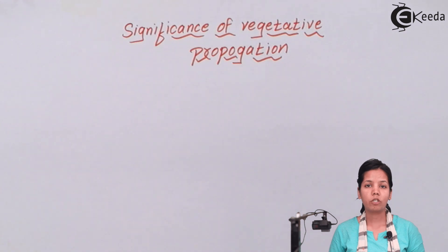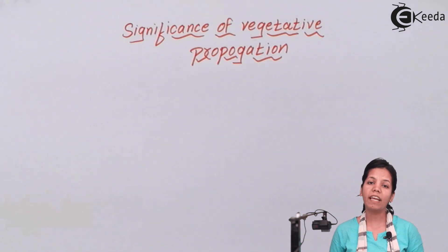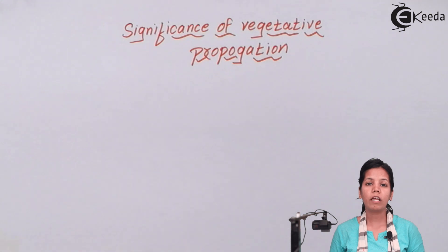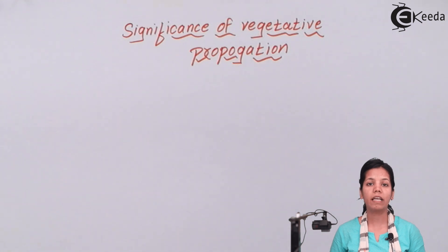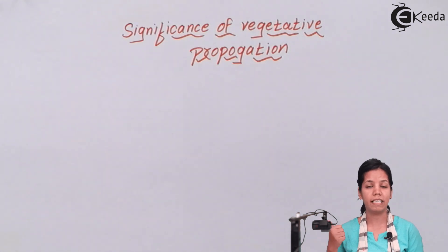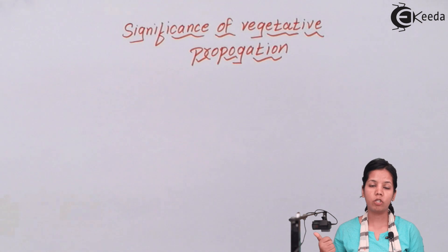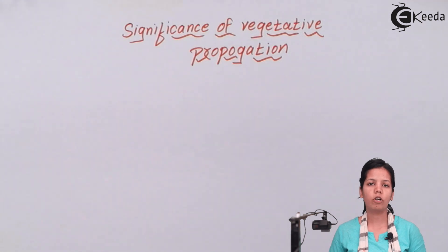Vegetative propagation helps in multiplication or growth of plants which cannot do proper reproduction. For example, there is no meeting of anther and pollen in these plants. For example, seedless grapes, in which viable or countable seeds are not produced.